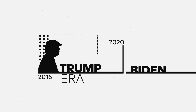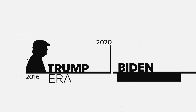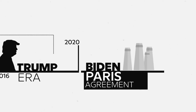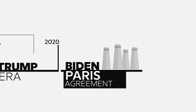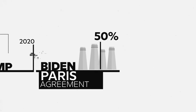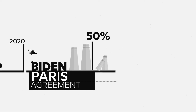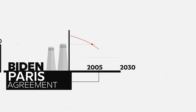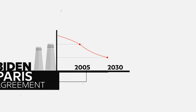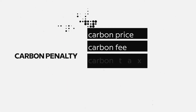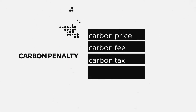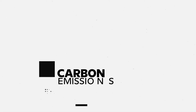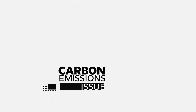After the Trump era in the US, the Biden administration rejoined the Paris Agreement and declared an ambitious plan of 50% reduction in greenhouse gas emissions by 2030, relative to 2005 levels. Therefore, imposing some form of carbon penalty — for example, carbon price, carbon fee, or carbon tax — will be a crucial component for addressing carbon emissions in the USA.